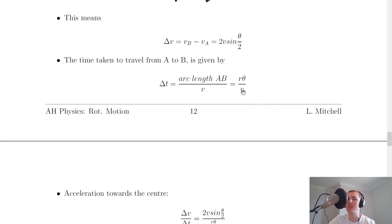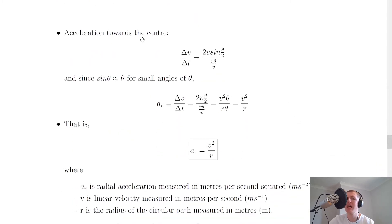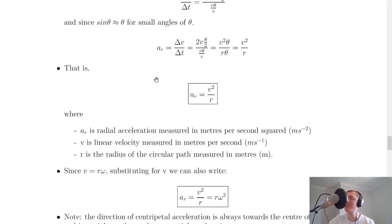We now have expressions for the change in velocity and the change in time, so we can use the definition of acceleration — change in velocity over change in time. This gives us 2V sine theta over two, divided by R theta over V. Applying the small angle approximation, which says that for small angles sine theta is approximately equal to theta, sine theta over two becomes theta over two. So centripetal acceleration AR equals 2V times theta over two, divided by R theta over V.